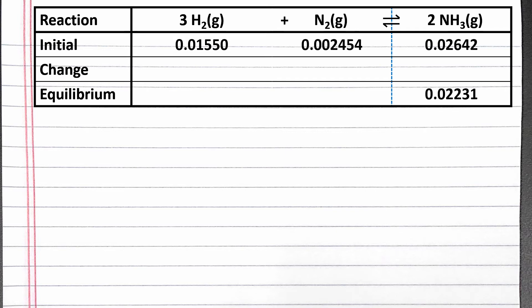To determine the direction the reaction shifts to reach equilibrium, we compare the initial concentration of ammonia to its equilibrium concentration. We see that the concentration of ammonia decreases to reach equilibrium. This means the reaction is shifting left, which uses up product and creates more reactant. Our shift will be plus 3x and plus x for our left side, and minus 2x for our right side. The coefficients of 3, 1, and 2 before x come from the coefficients in the balanced chemical equation.